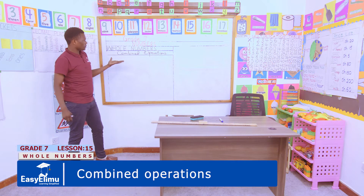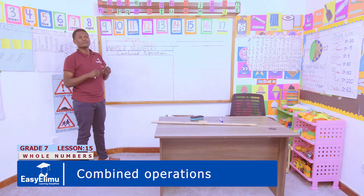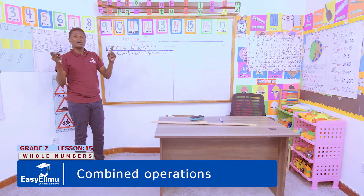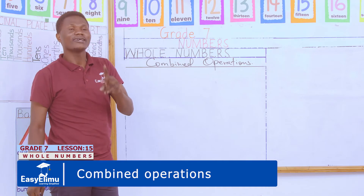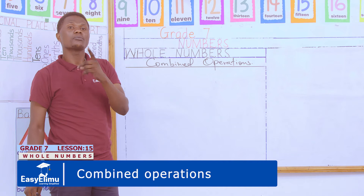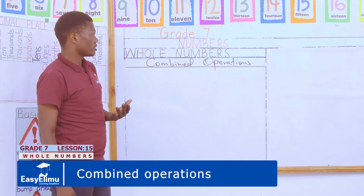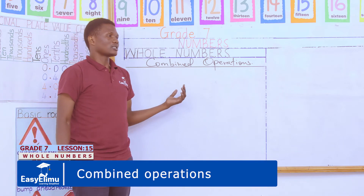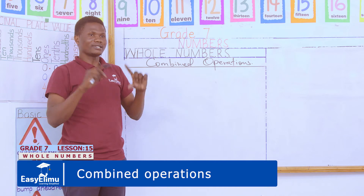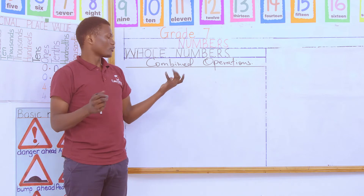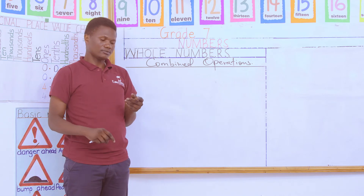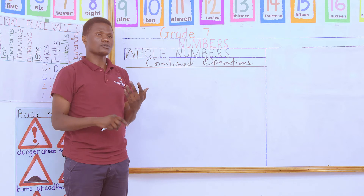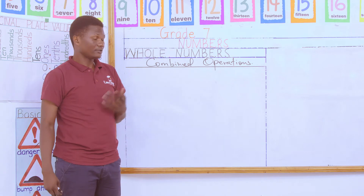Under combined operations, we are basically bringing more than one operation sign in a single problem or in a single question. You can find a question that entails both addition and subtraction, or multiplication and division, or all four of them together.